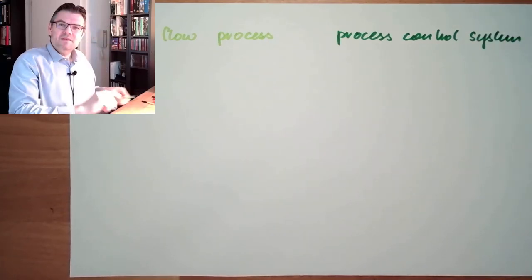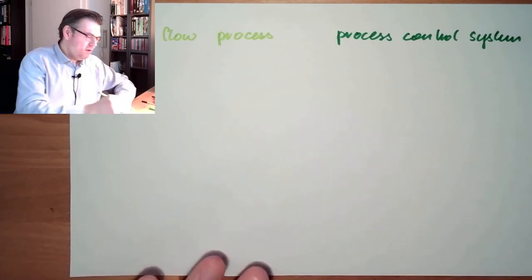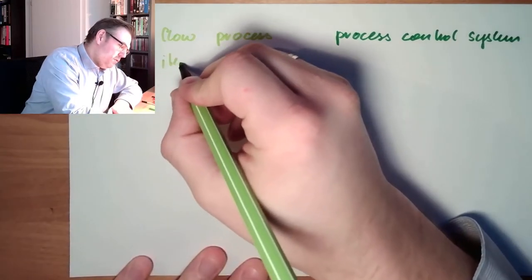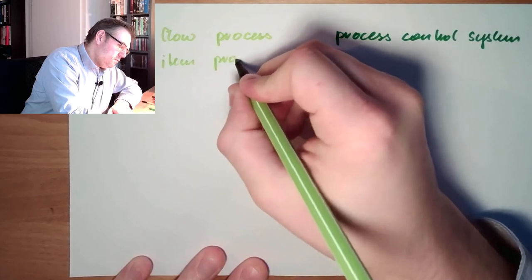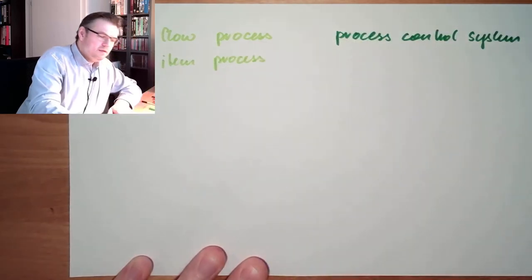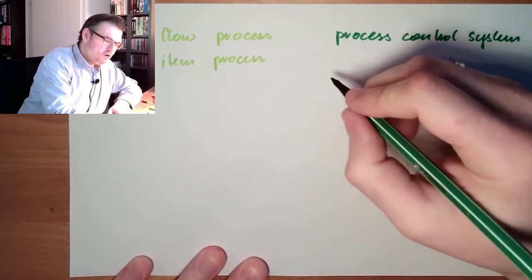If you have a parcel process, item by item, an item process, then it's a manufacturing or production control system.